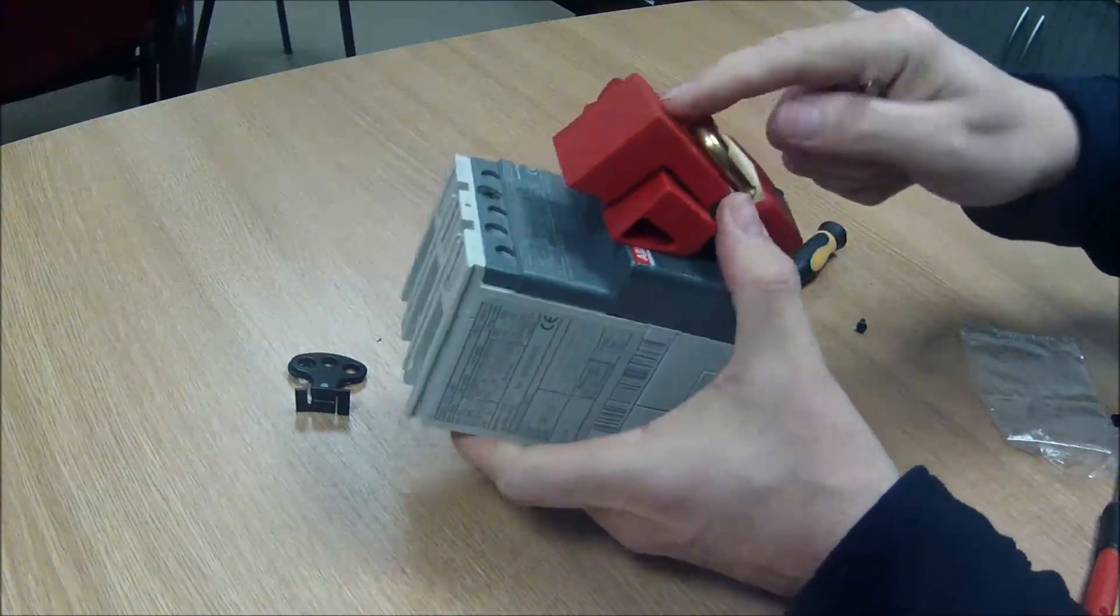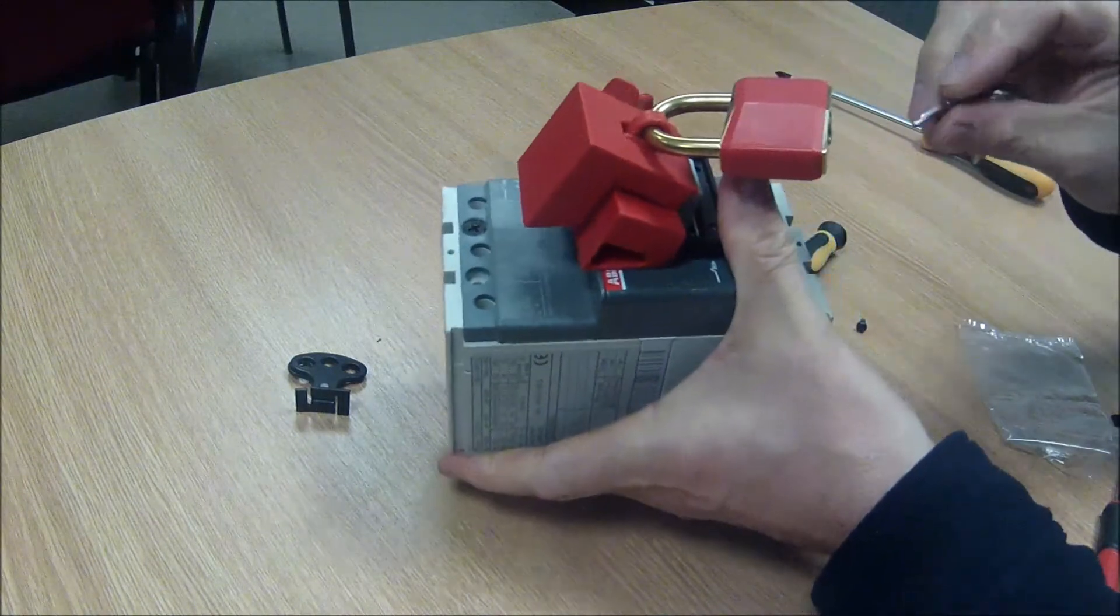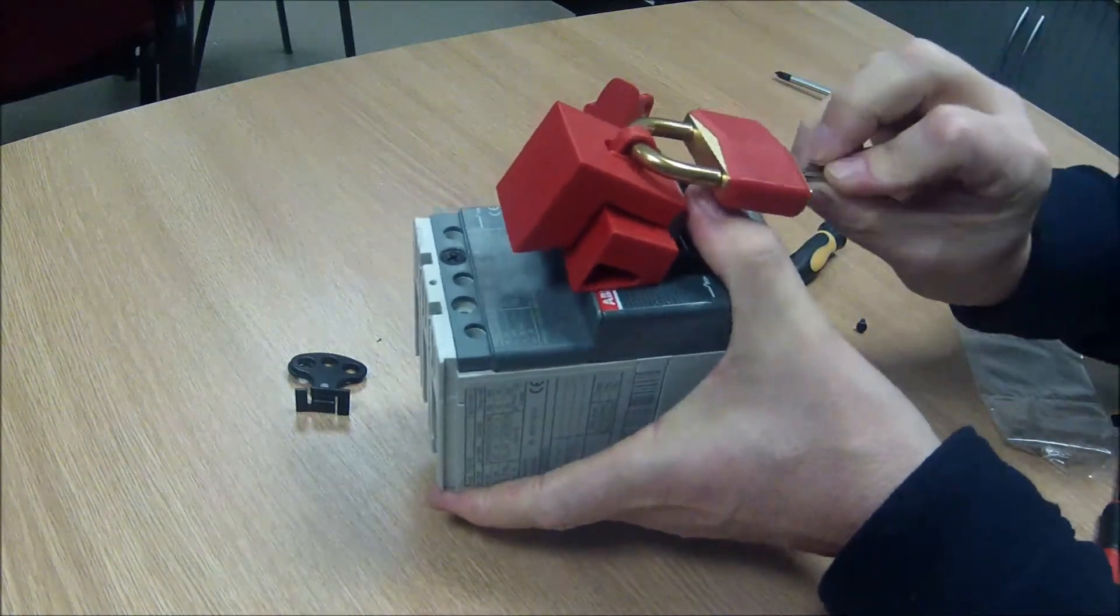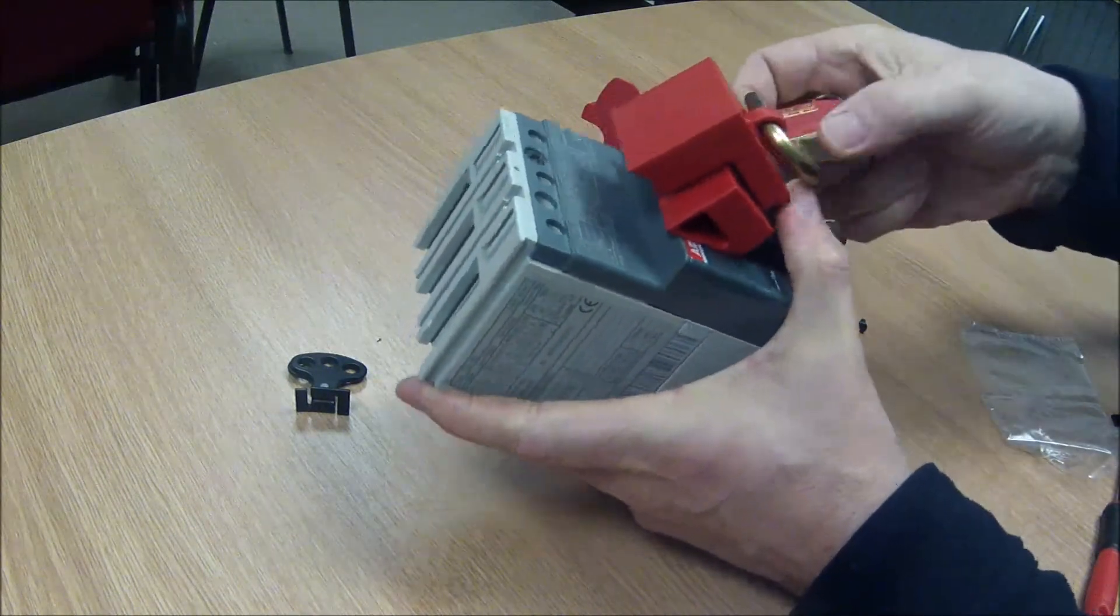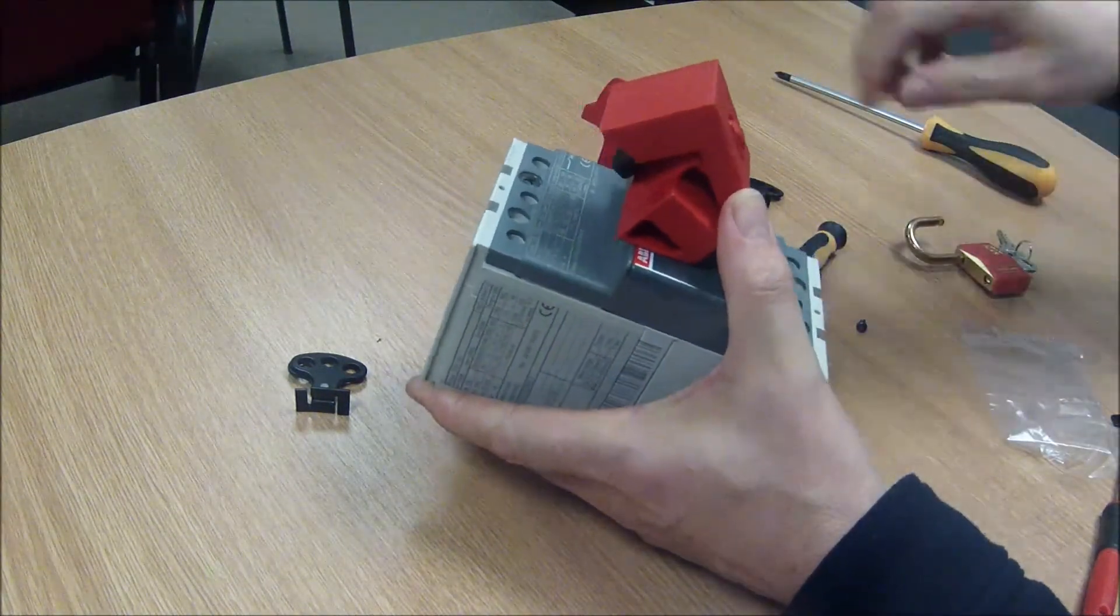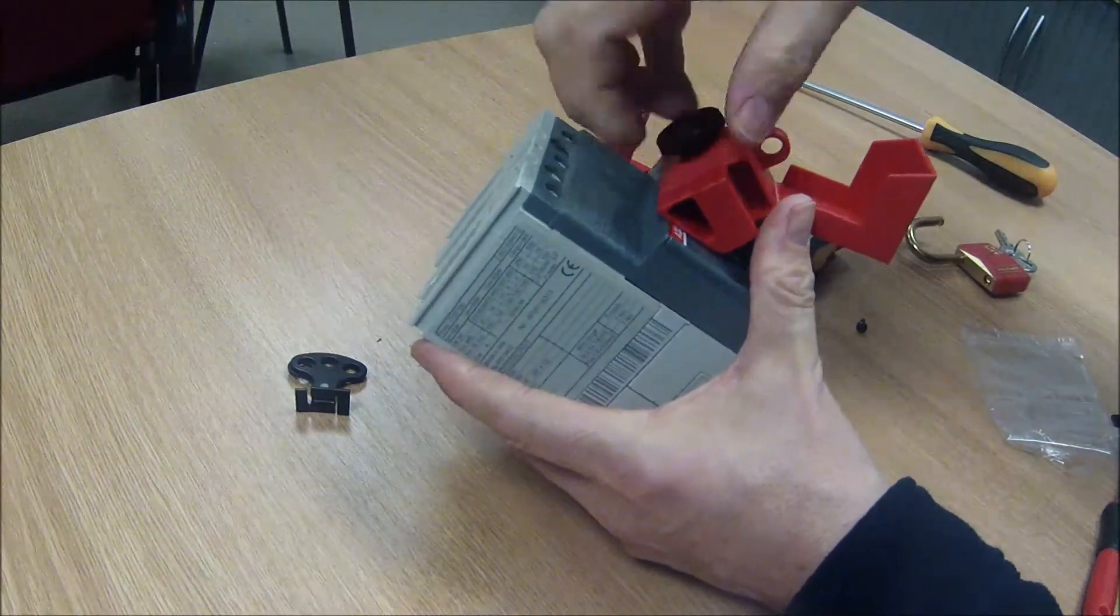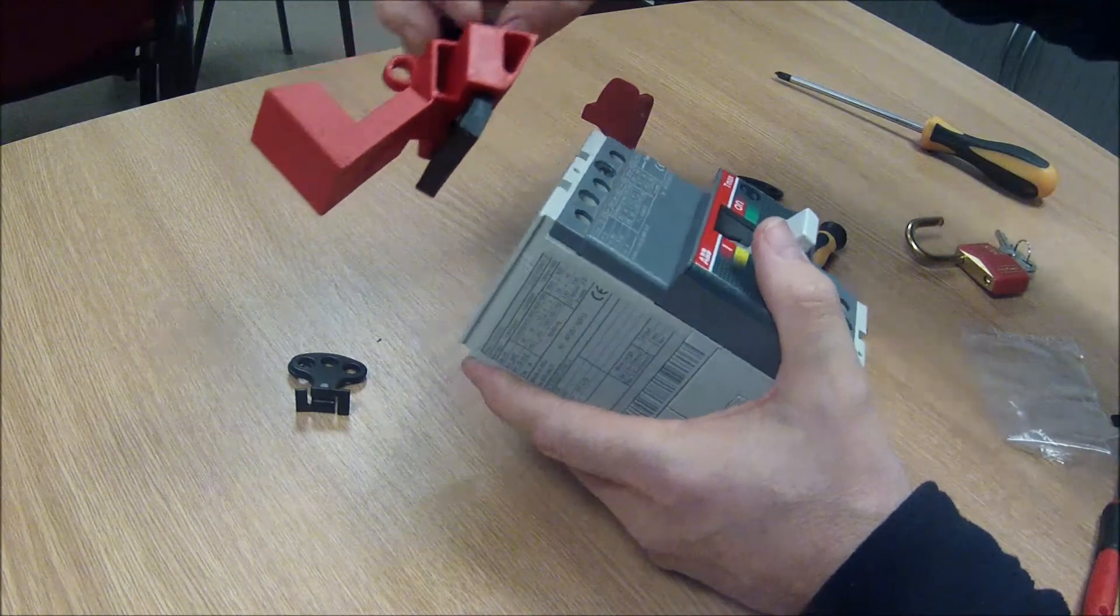The only downside of this unit here is you've only got facility for one padlock. But of course you could hang a multi-lock hasp on there. If you want to do isolation for more than one worker. So that's the Brady 65396.